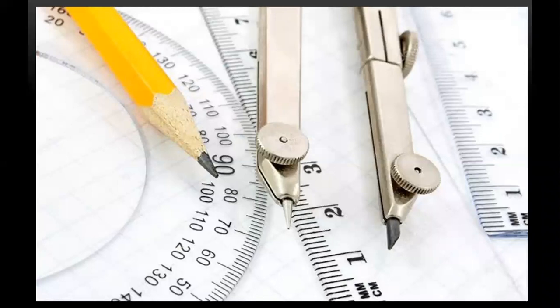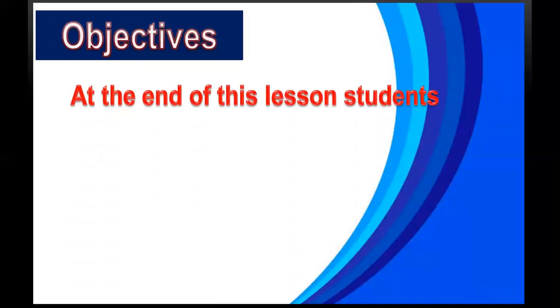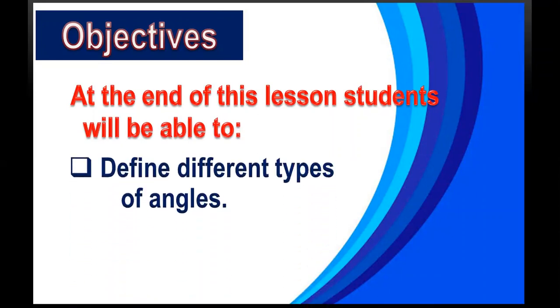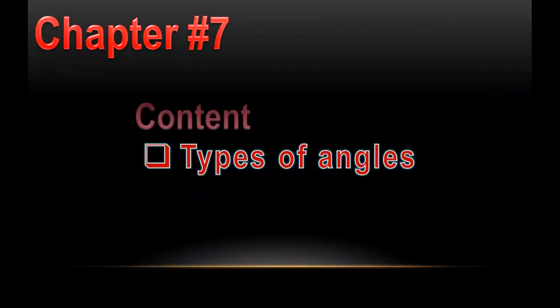Students, today we are going to start our new lesson. The name of our new lesson is Geometry. Today we will start our new chapter geometry. Objectives: at the end of this lesson, students will be able to define different types of angles and identify different types of angles. Our chapter number is 7 and the content is types of angles.